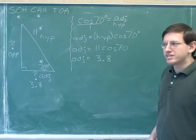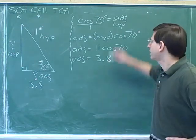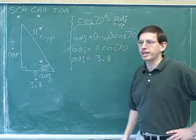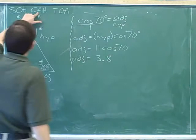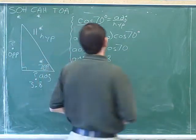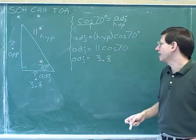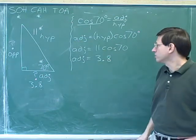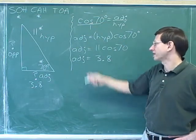Once people are comfortable with this material, they don't usually start with the ratio equation. Instead, they usually start directly with the rearranged equation. So maybe now is a good time to get into the habit of starting with this equation. If you want to figure out the adjacent side from the hypotenuse, you use the cosine — the adjacent side is just the hypotenuse times the cosine of the angle. So anytime you're given the hypotenuse and an angle, you can find the adjacent side by taking the hypotenuse times the cosine of the angle.